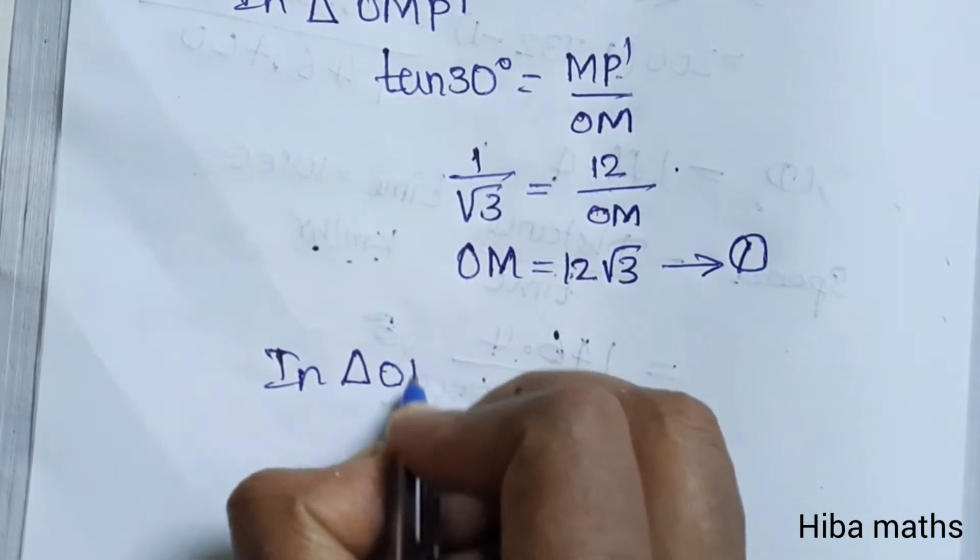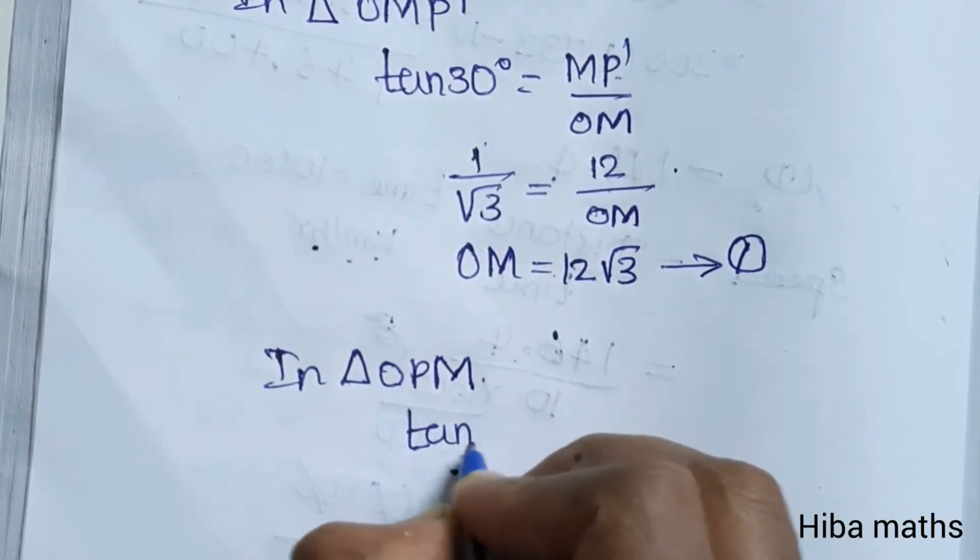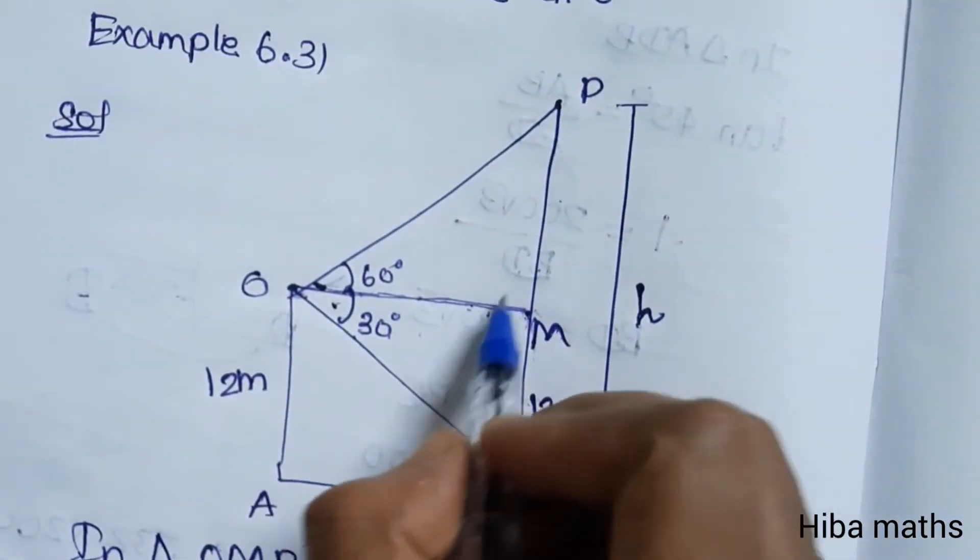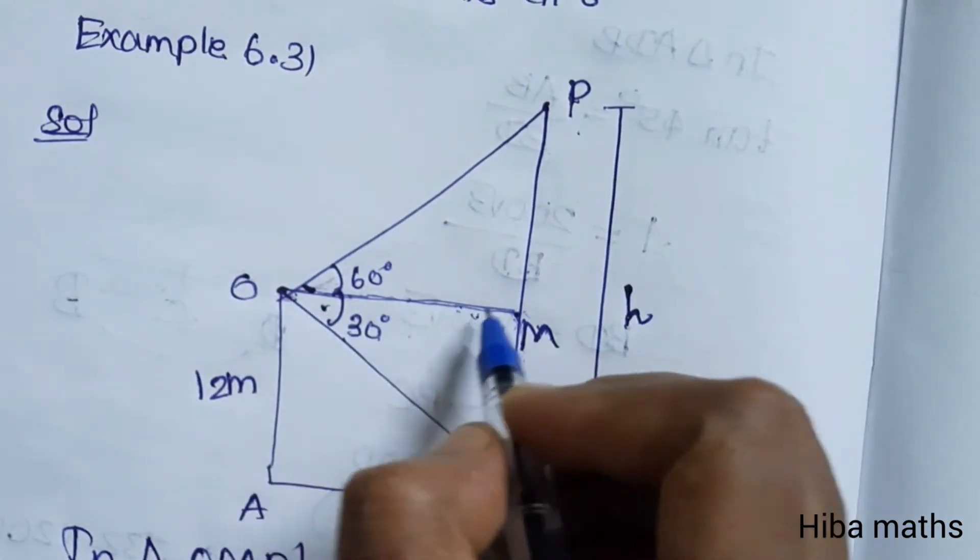Opposite is PM, adjacent is OM, and OM value is equal to 12 root 3. So opposite PM divided by OM, tan 60 value root 3 is equal to PM by OM.